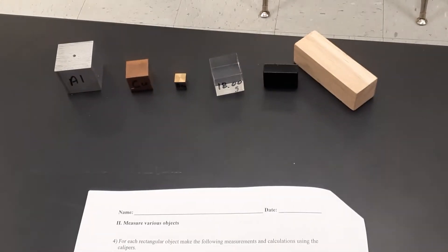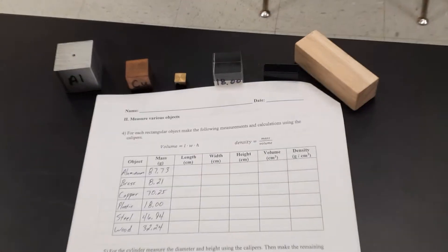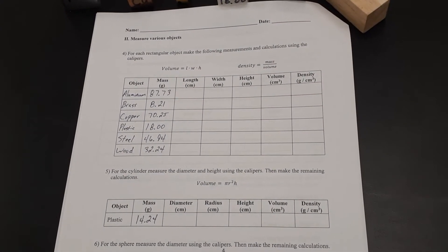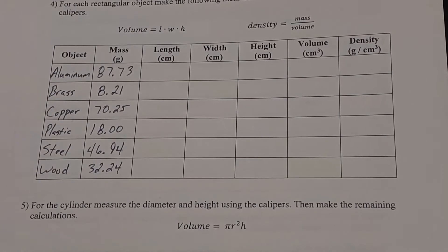But the first thing I want to give you is the mass for each one of these objects. So right here, I've got them written out in order, but you have the aluminum, the brass, copper, plastic, the steel, and the wood. And then I'm going to go ahead here and give you the masses for the other two objects, the cylinder and the sphere also.